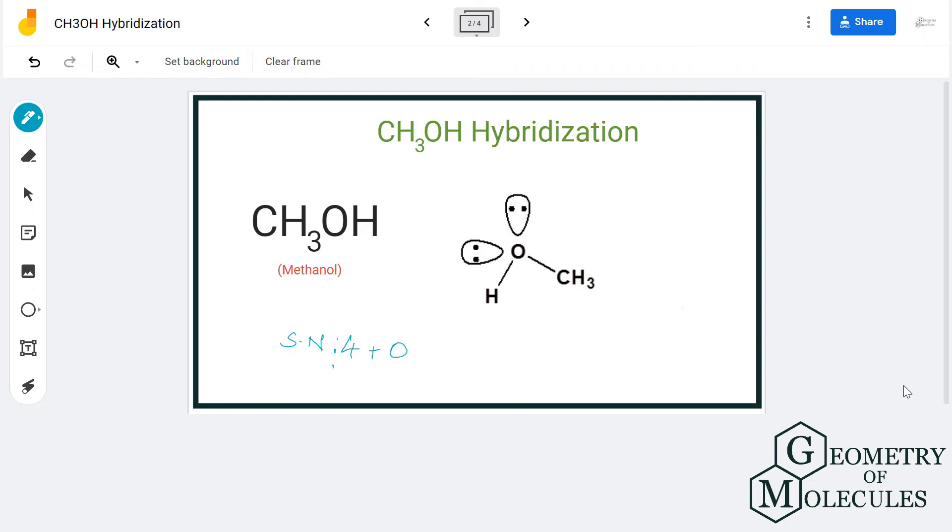There are four atoms bonding to this carbon atom as there are three hydrogen atoms forming bonds with carbon atom and one OH group. So the total number of atoms forming bonds with carbon atom is four. Hence, the steric number for carbon is four.